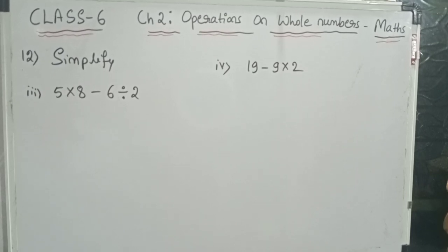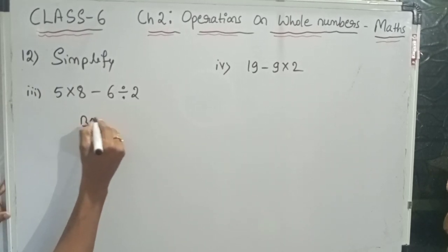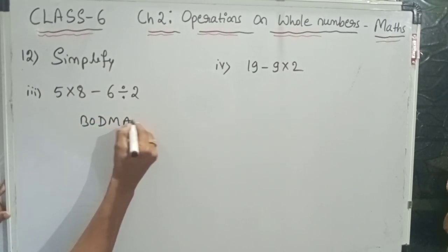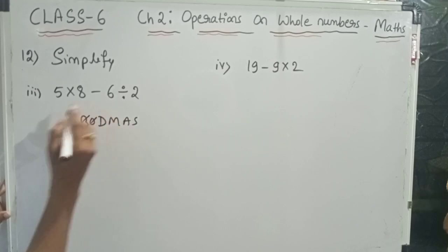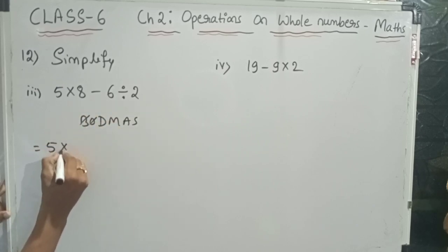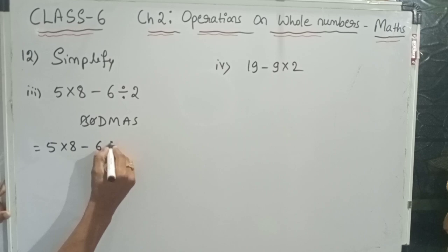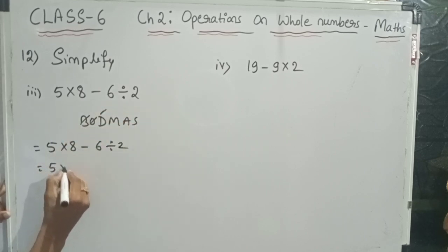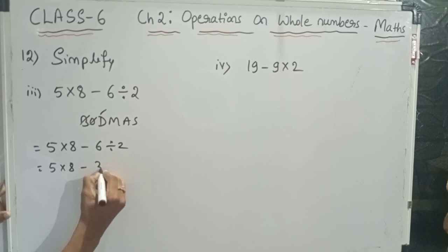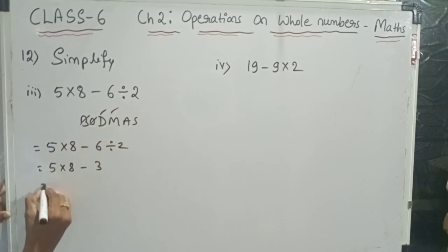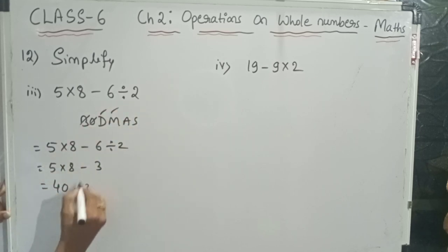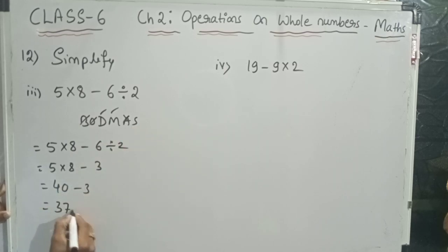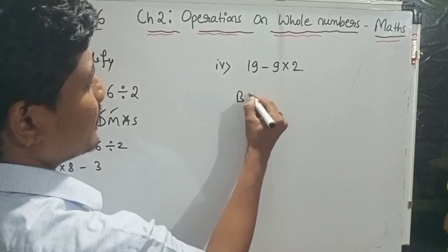For the next question, I am using the BODMAS rule. Bracket is there and division is there. 6 divided by 2 is 3. The expression becomes 5 into 8 minus 3. Multiplication: 5 into 8 is 40. There is no addition, so subtraction: 40 minus 3 is 37. So 37 is the answer.